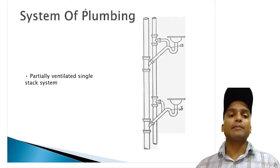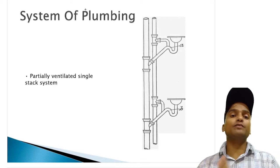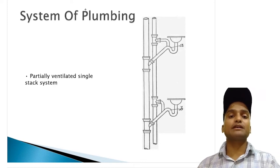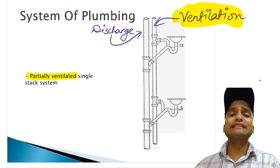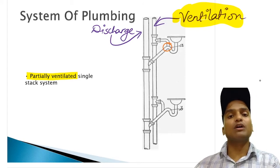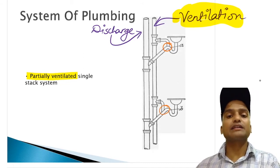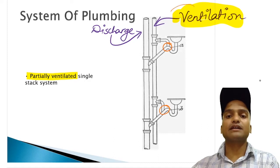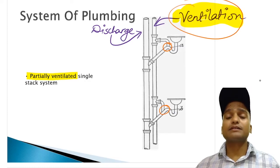The third system of plumbing is partially ventilated single stack system. It has got two vertical stack pipes. One is the discharge pipe and another is the ventilation pipe. In this case, the ventilation stack is now just ventilating those traps or plumbing fixtures through which the soil water just passes. That's why only water closet traps are connected with the ventilation stack.